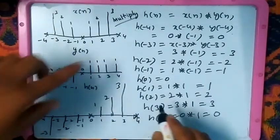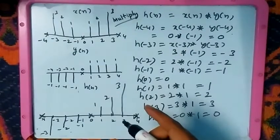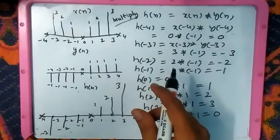This is how we multiply the two discrete time signals. Alright, thank you.